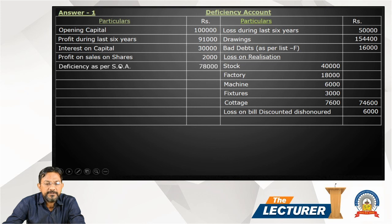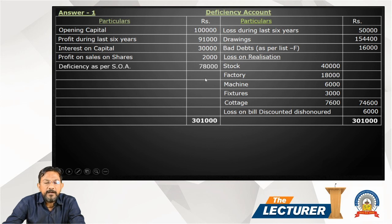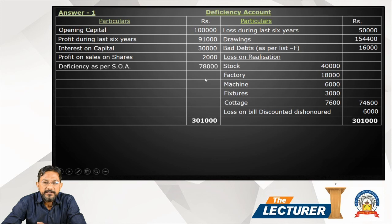So, deficiency as per statement of affairs is 78,000, and the deficiency account balances to match. I will complete the next lecture in a few minutes. Thank you.